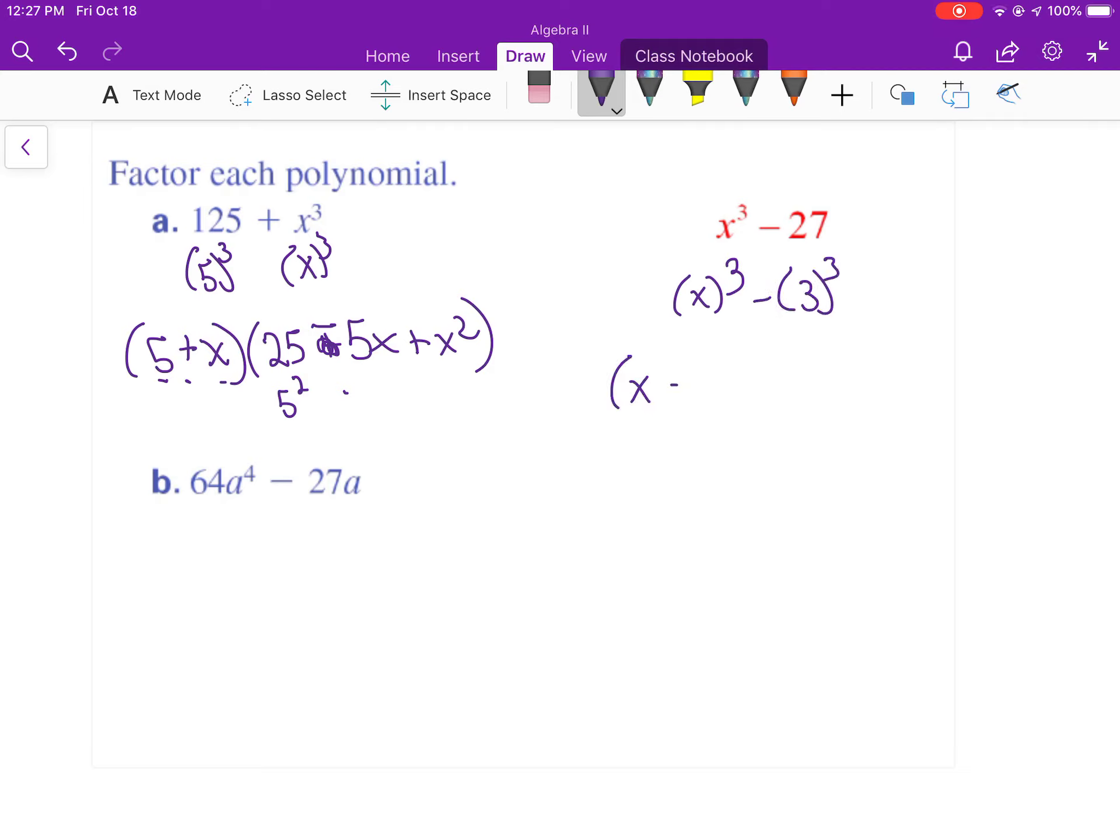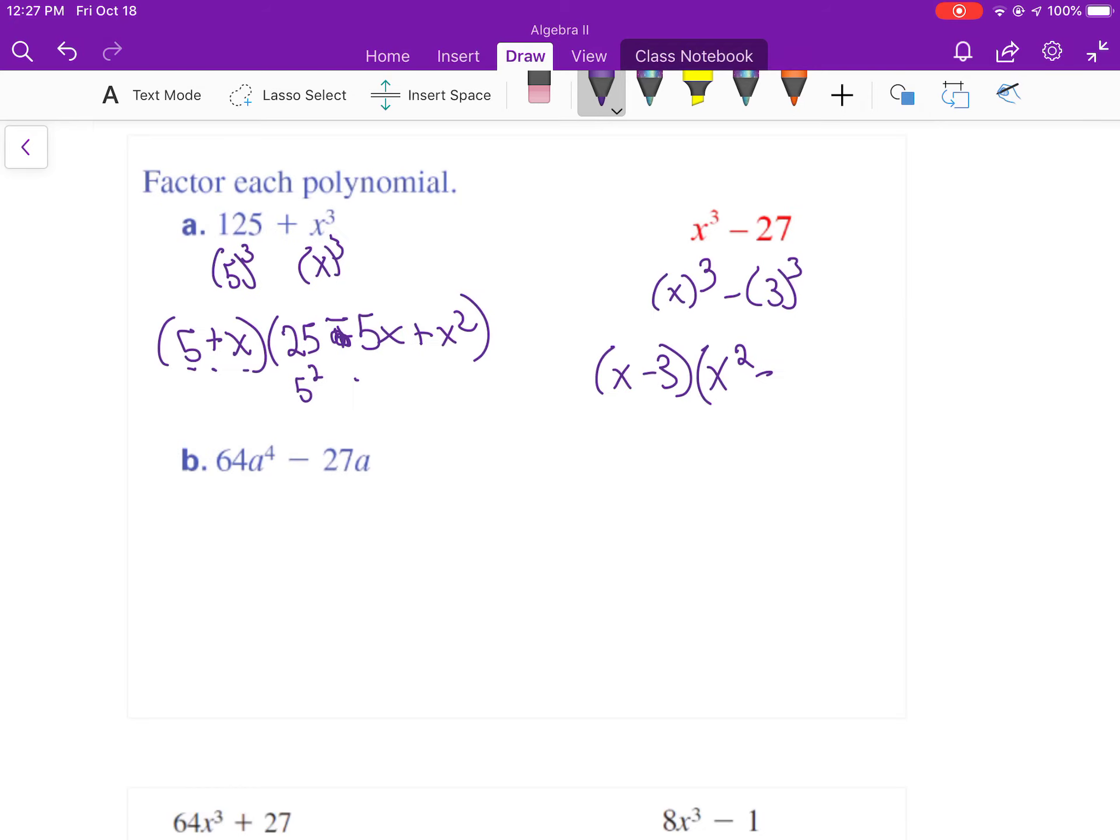So, x minus 3, x squared, minus 3x, and then plus 3 squared, 9. So, I started with a minus, so I start with a minus. Opposite, so that should be a plus, and then the last one's always positive.